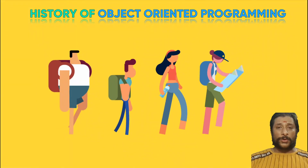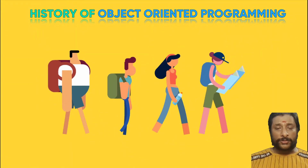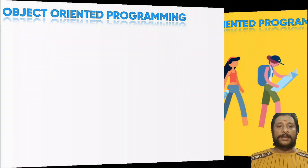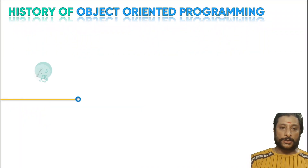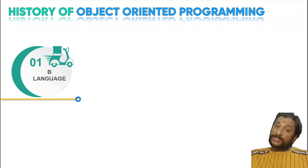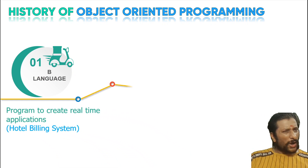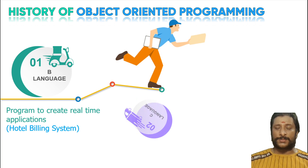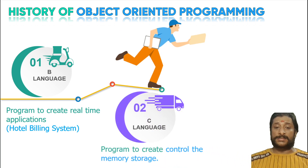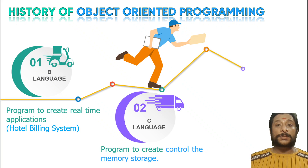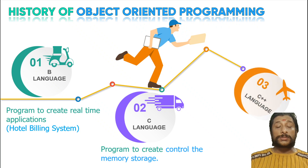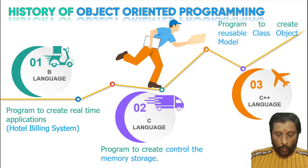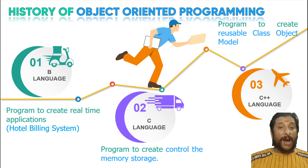Let us talk about the history of object-oriented programming. The first thing is the basics of B language — that is the initial language created. B language was not used for real-time application creation, like a hotel building management system. That is why C language came. But the major problem is we could not use it to create multiple things — for example, if I want to create thousands of pins, your C program cannot do that.